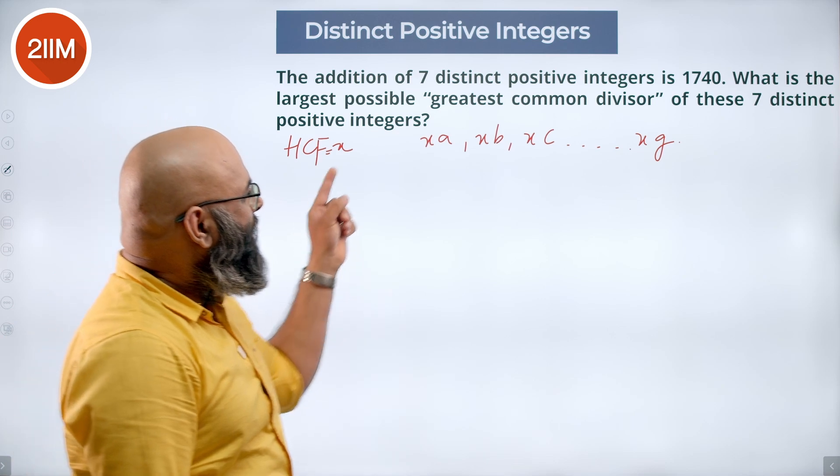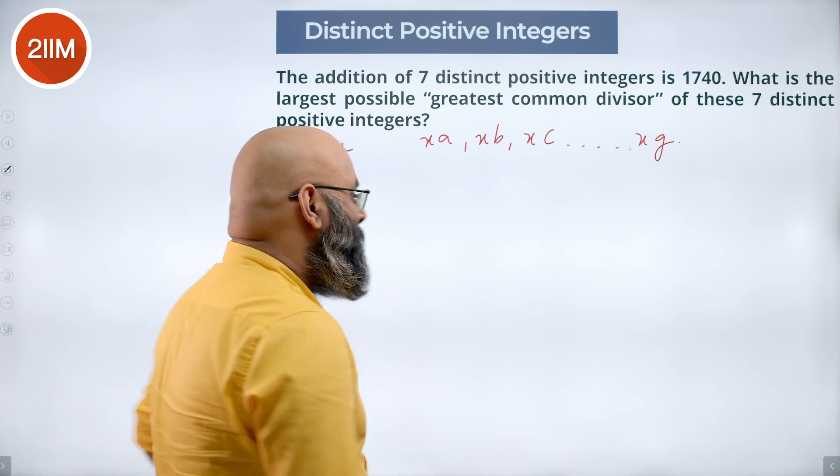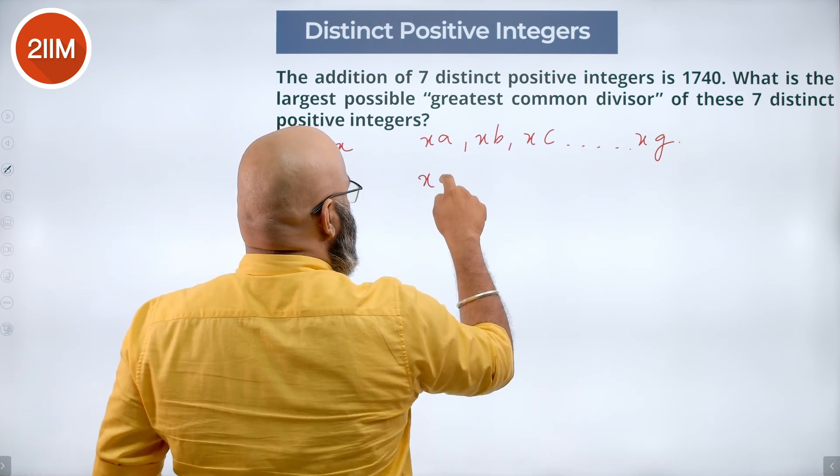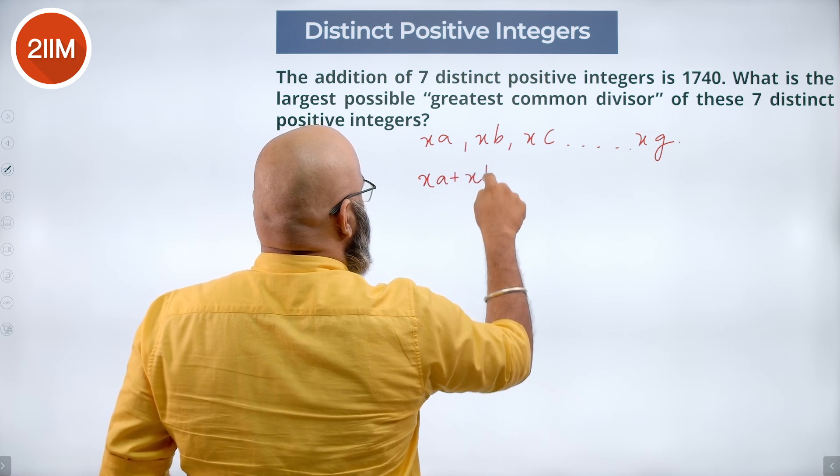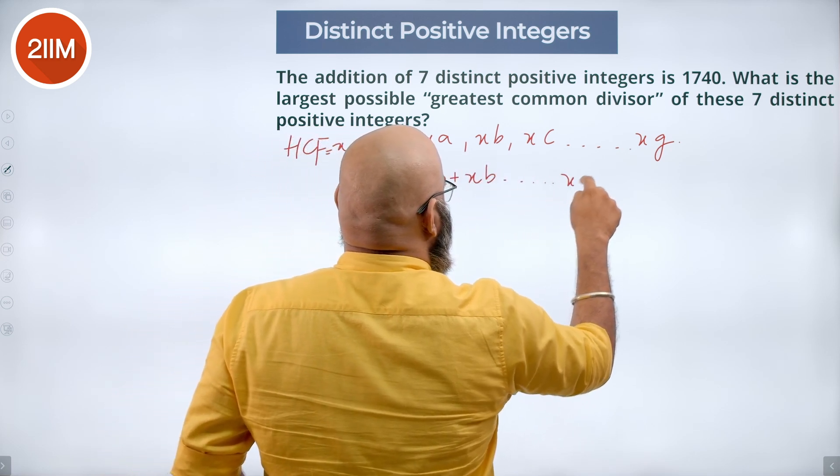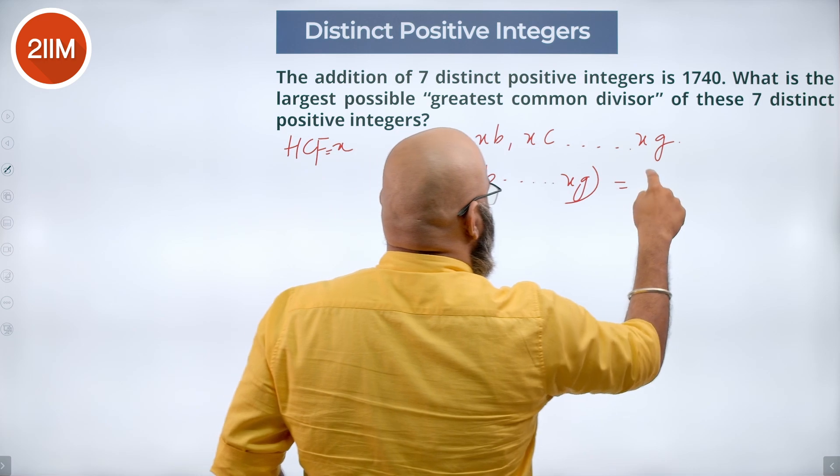We have this and the sum of these 7 numbers is going to be 1740. So we say XA plus XB up to XG is equal to 1740.